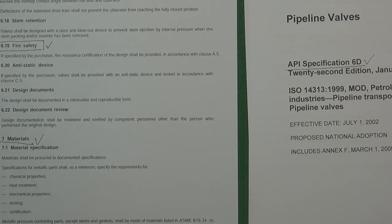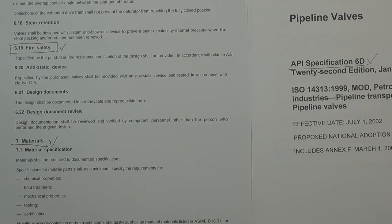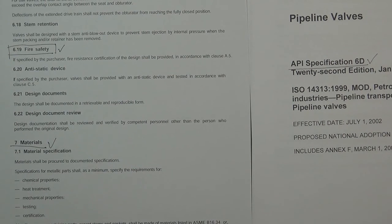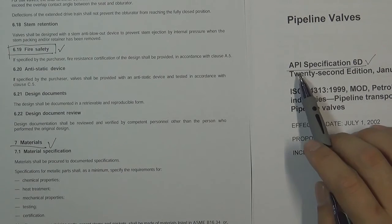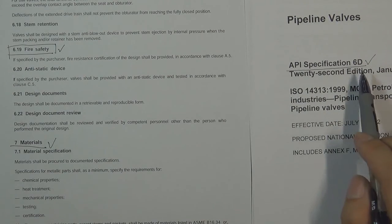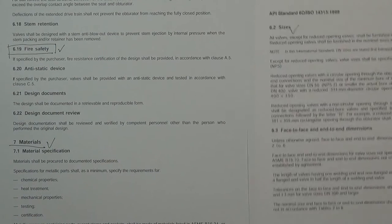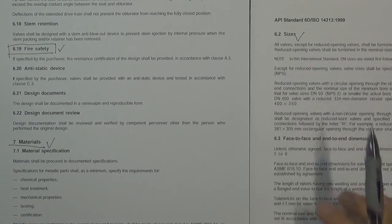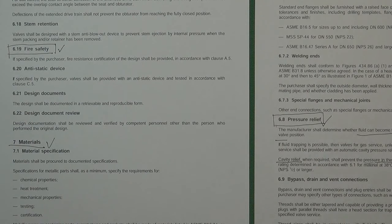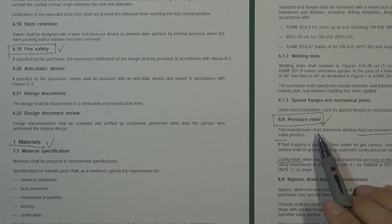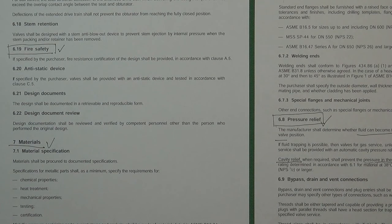So now we have covered three basic things about designing a valve by API 6D: fire safety, valve size, and pressure relief. Thank you for watching. See you in the next video. Bye-bye.